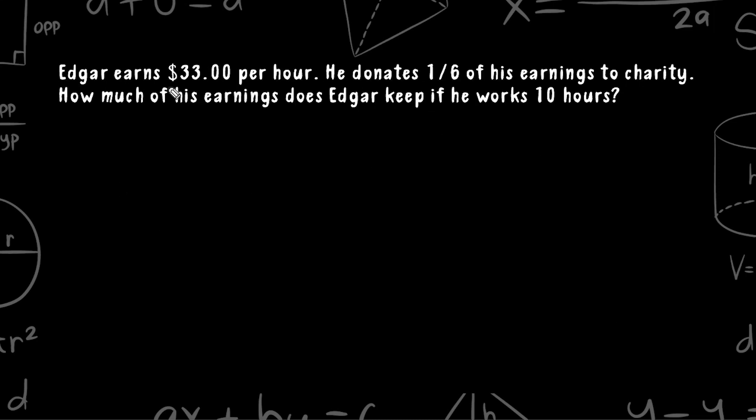So Edgar earns $33 per hour. He donates 1 sixth of his earnings to charity. How much of his earnings does Edgar keep if he works 10 hours?